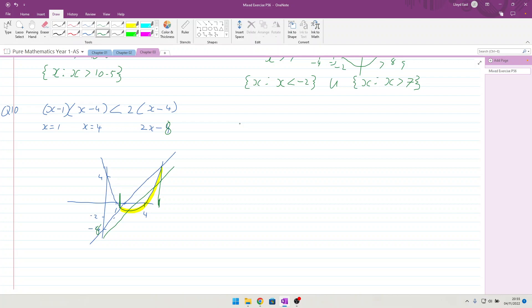We're going to try and solve this equation. If we multiply it out, we get x squared minus 4x minus x plus 4 less than or equal to 2x minus 8. So x squared minus 5x minus 7x, bringing the 2 across, plus 12 is greater than 0. We end up with x equals 3 and x equals 4 when we put it into the calculator.